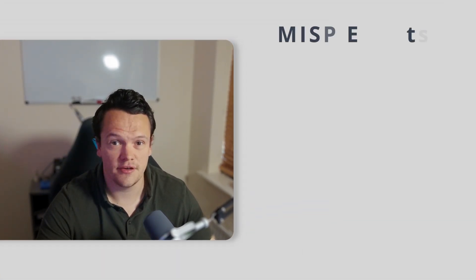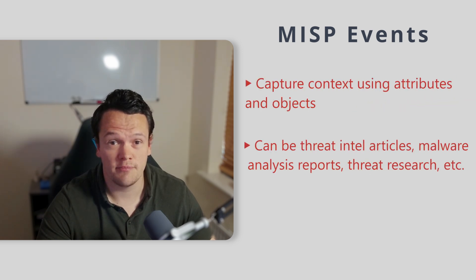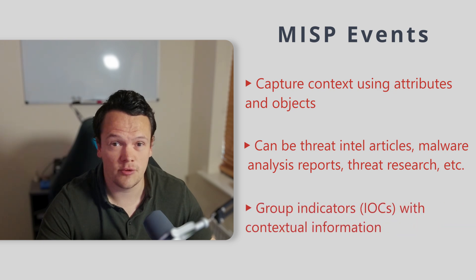Once you've got threat intelligence into the platform, you need to know how to find what is relevant to you, be it an IOC, specific event or any other attribute. MISP events are encapsulations of contextually related information represented by attributes and objects. They can be threat intelligence articles, malware analysis reports, threat research or any other way you can imagine threat intelligence can be represented. Events are individual containers that group atomic pieces of threat intelligence with contextual information so that analysts can use it.